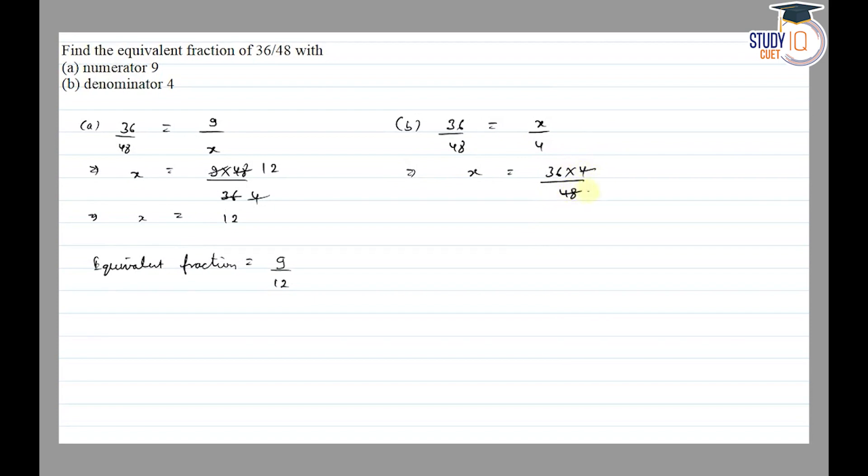So 4 cancels out to 12 times, and 12 cancels out to 36, 3 times. x is equal to 3. The equivalent fraction is equal to 3 by 4.